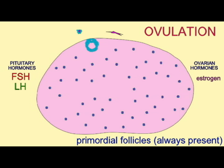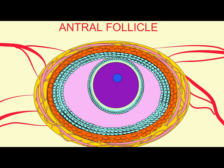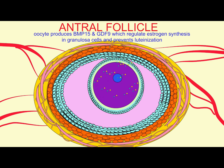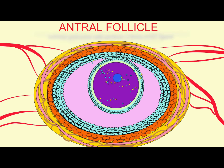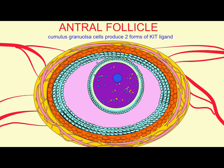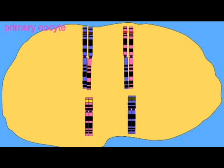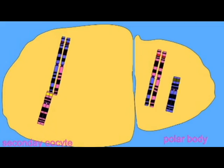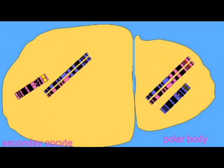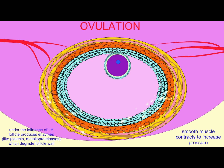LH causes the follicle to decrease the number of gap junctions which connect the oocyte to the cumulus granulosa cells, and as their interaction decreases, the oocyte resumes meiosis — completing the first meiotic division and then pausing in metaphase II of the second meiotic division.